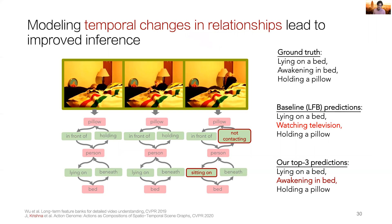It's worth looking at explicitly how scene graphs improve over existing action recognition models. For example, the person in a video initially lies in a bed, then awakens, and finally holds a pillow. Recent baselines rely too heavily on training set priors and incorrectly predict that a person is watching television after predicting they are lying in bed. In comparison, our method correctly predicts the action 'awakening in bed' by utilizing the change in relationship between the person and the bed — from lying on to sitting on — and from contacting to not contacting the pillow.